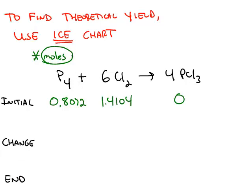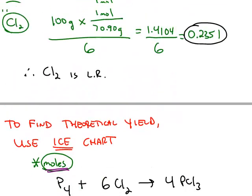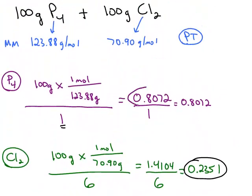The numbers that you plug into the ICE chart are going to be in the unit of moles. So the initial is where we started. On the previous video, we calculated the moles of phosphorus and the moles of chlorine. And so I've repeated those numbers here. And notice, these are the numbers before we divide by the coefficient.